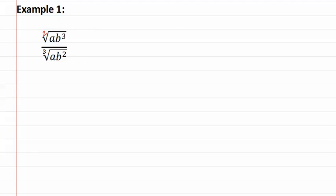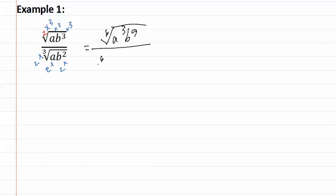This means we have a 2 and a 3. To get a common index, we would need to multiply the top one by 3 and the bottom one by 2. This will give us the sixth root of a to the third, b to the ninth, over the sixth root of a squared, b to the fourth.